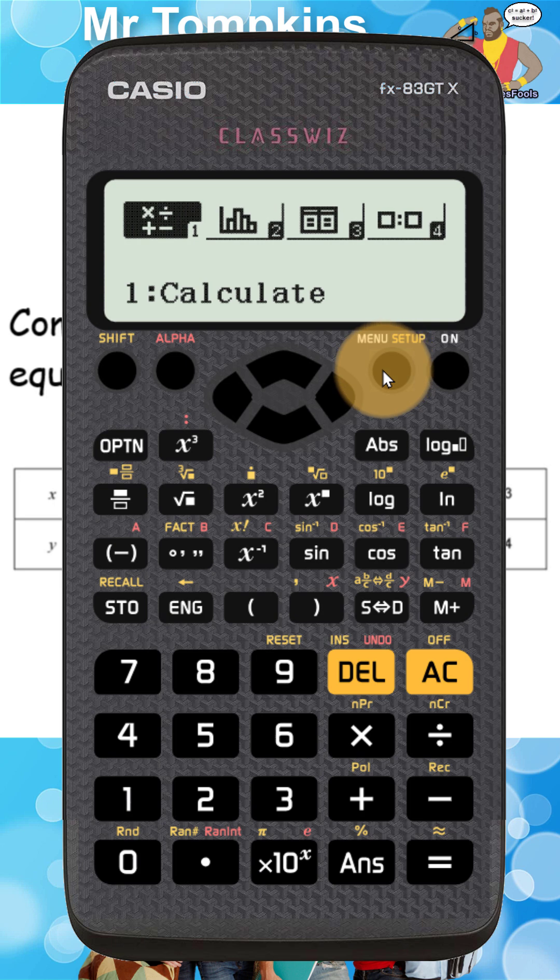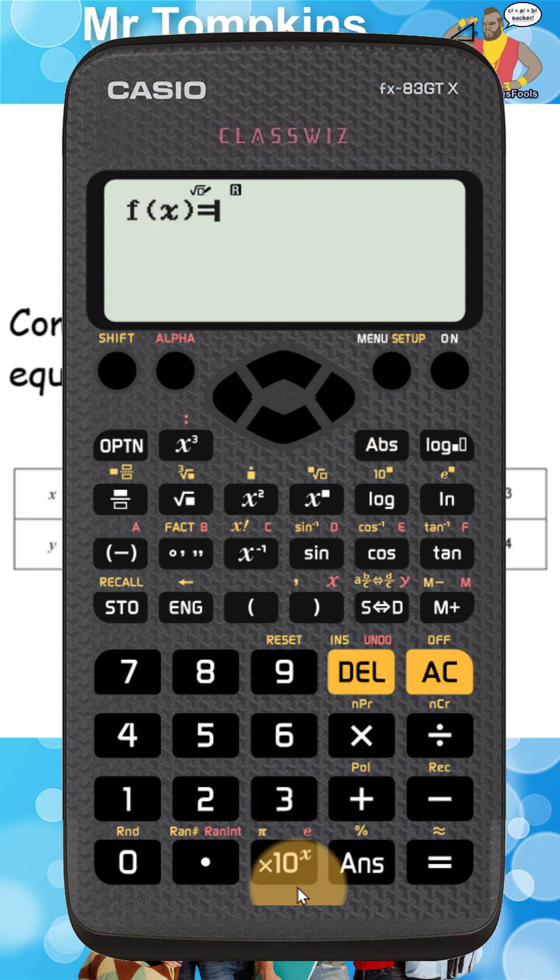Now on the old calculator first I'm going to press the menu key and then I'm going to select option 3 which is table mode.